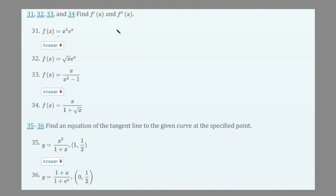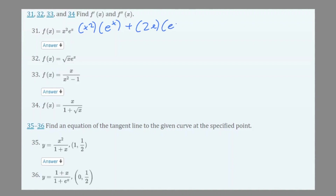Alright, so let's get on with the first few questions. Number 31 is f(x) = x² times eˣ, so we would use the product rule here. f(x) is x², and e to the power of x is g(x). So we would have g'(x) which is eˣ, plus 2x which is f'(x), and then times eˣ which is g(x).